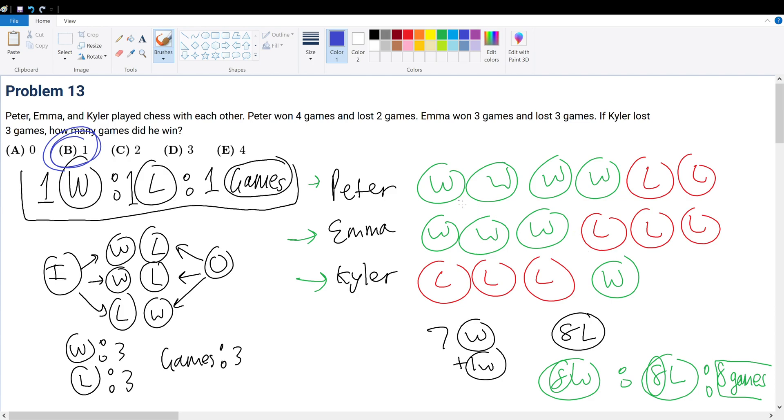Let's assume that this win corresponds with this loss. This one corresponds with this loss. This win corresponds with this loss. That means this loss corresponds with this win. And this loss corresponds with this win. And I have 2 wins here. So that means that if I have to have the wins, that means this is a win and loss. And then the other 3 games are played outside between Peter and Emma.